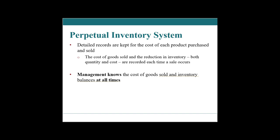Loblaws' overall profit margins — after all cost of goods sold and operating expenses — are like two to three percent. So they need to have good controls on their system to know what's going on, like how many strawberries are walking out the door.